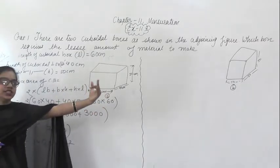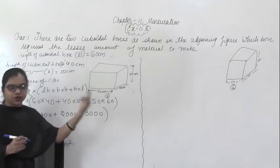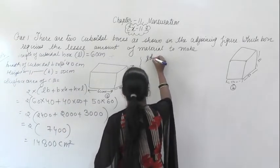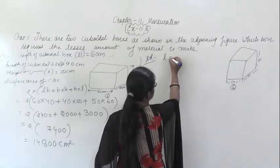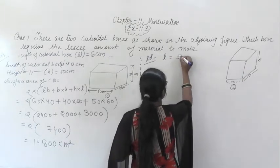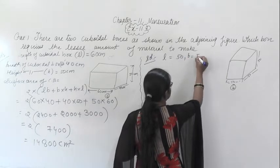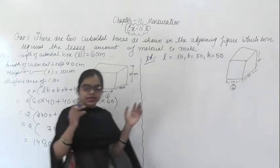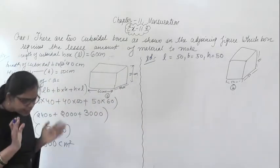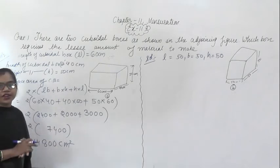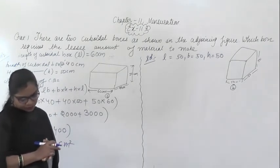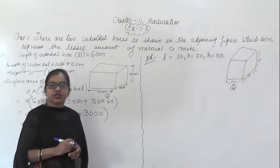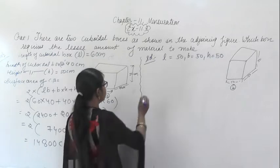Now you have to find out the surface area for the next box. Similarly, length is given to you as 50, breadth is also given to you as 50, and height is also given to you as 50. So length is 50, breadth is 50, height is 50. You have to find out the surface area of this cuboidal box.